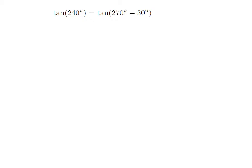As 240 degrees is equal to 270 degrees minus 30 degrees, so tangent of 240 degrees is equal to tangent of 270 degrees minus 30 degrees.